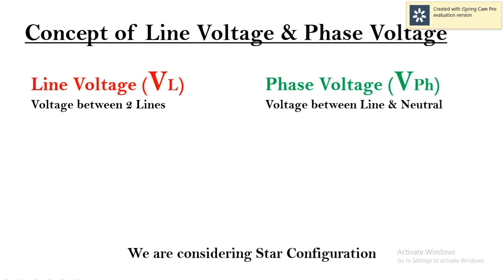Suppose we are considering star configuration. Therefore, the equation would be line voltage equals root 3 times the phase voltage. From this equation, we can calculate the value of phase voltage. Therefore, phase voltage equals 1 by root 3 times the line voltage.